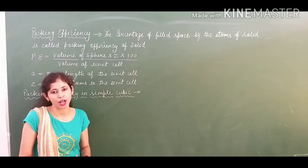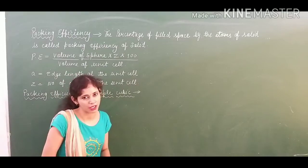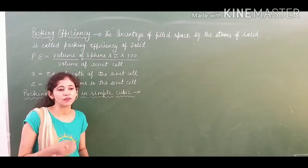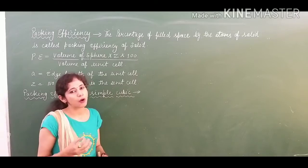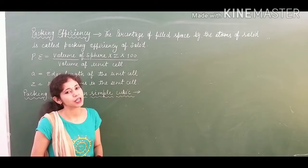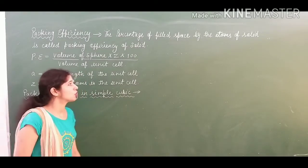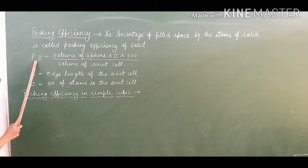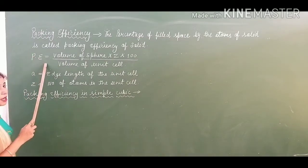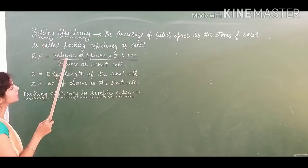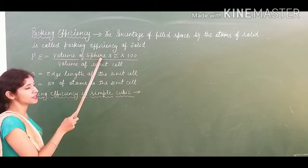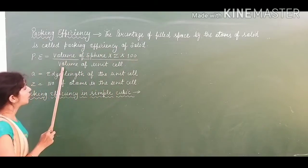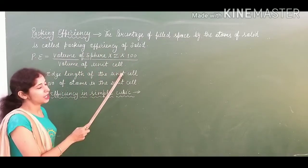To calculate percentage, you always multiply by 100. In today's session we will discuss how to find out the packing efficiency in terms of simple cubic. The formula we use is: volume of sphere × Z × 100, divided by volume of unit cell.